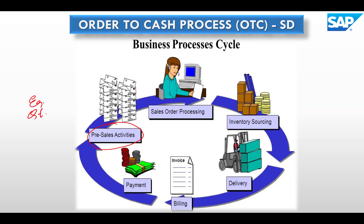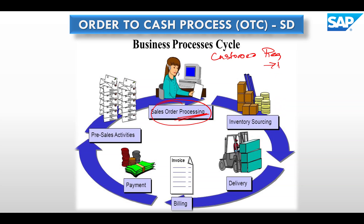Once the quotation has been finalized, we generate a sales order based on the customer requirement. The sales order contains product details, quantity, pricing, the customer's address, and many more data points.